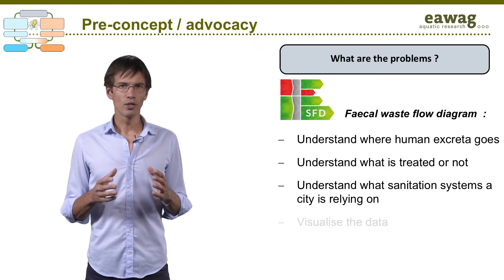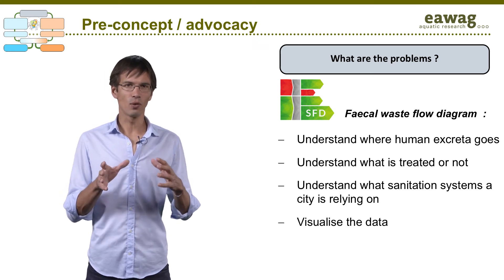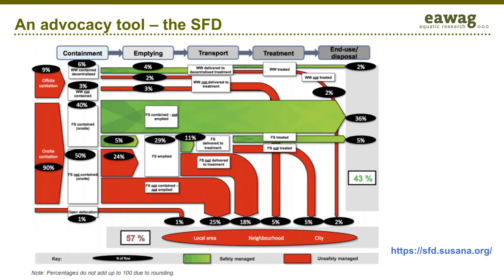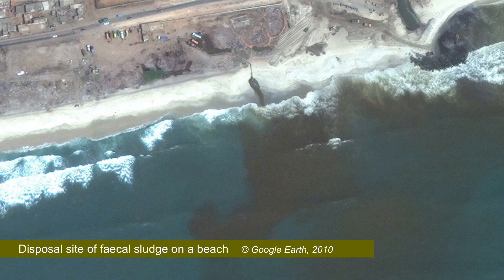The SFD tool turns the data collected into an automatically generated flow diagram. Go to the SFD website to learn more and make your own SFD, and watch the dedicated module in this course. Think, for example, about the impact for the public of fecal sludge discharged directly into the sea of a large coastal city. The SFD is a powerful advocacy tool because many decision makers don't actually realize the sanitation gap in their city and its consequences. An SFD is a great way to engage the key stakeholders in your project.